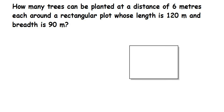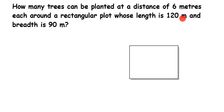Here is a question on perimeter of rectangle. The question is: how many trees can be planted at a distance of 6 meters each around a rectangular plot whose length is 120 meters and breadth is 90 meters?